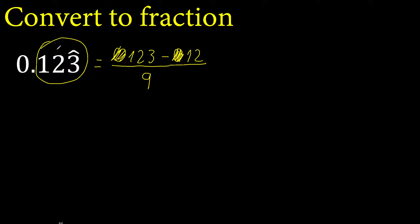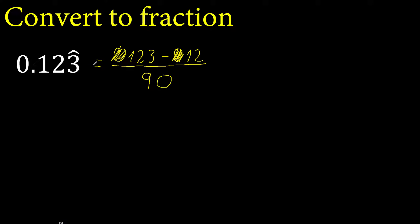After the point there are two numbers outside the symbol, therefore 0, always 0. Two numbers, therefore 0, two times.